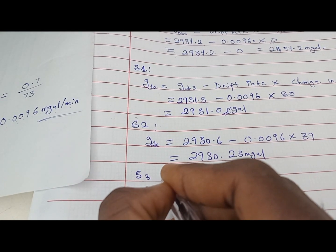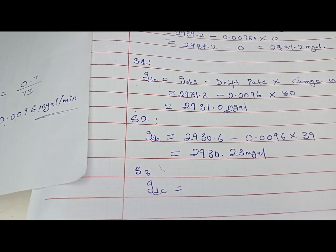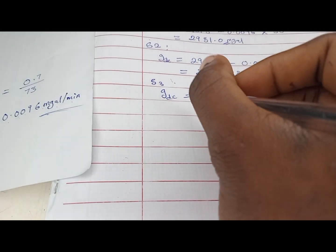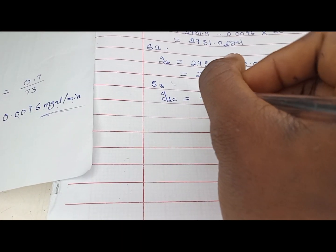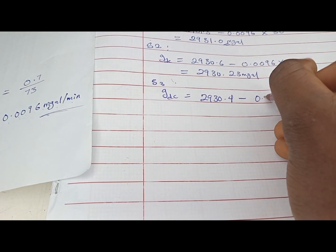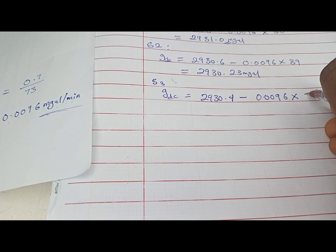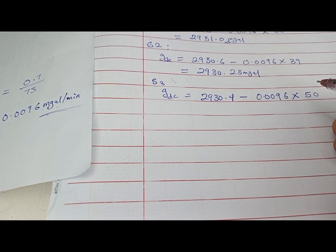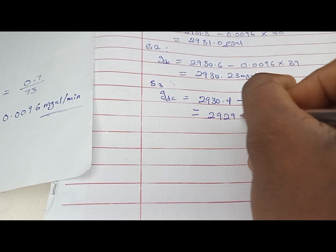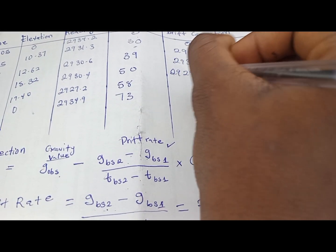For station three, GDC equals G_observe of 2930.4 minus drift rate 0.0096 times 50 minutes. Using the calculator: 2930.4 minus (0.0096 times 50) gives us 2929.9 milligals.